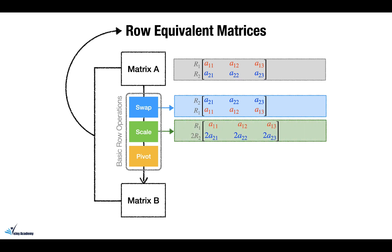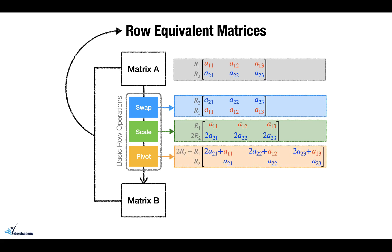When you apply a scale operation, you multiply a row by a non-zero scalar. Here the second row is multiplied by two and the first row remained unchanged. When you apply pivot, you basically replace one row by the summation of that row and a multiple of another row.